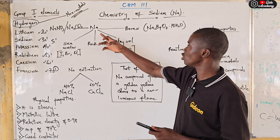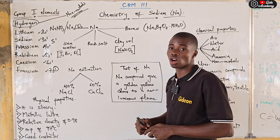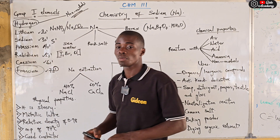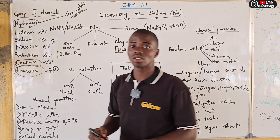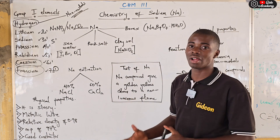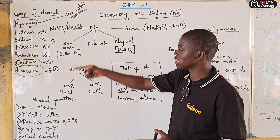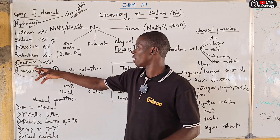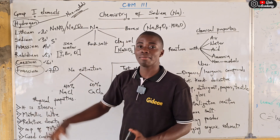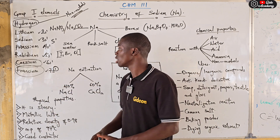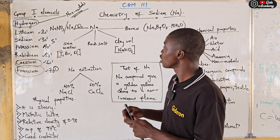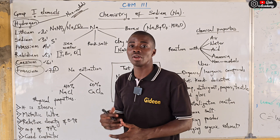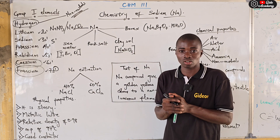Now let's talk about the occurrence of sodium. Sodium is a very reactive element. Group 1 elements are very reactive — the most reactive among them is francium, followed by cesium. Electropositivity increases down the group and decreases across the period, so Group 1 elements have higher electropositivity, higher metallic character, and are very reactive. Because of this reactivity, sodium does not occur in isolation — it doesn't occur on its own.